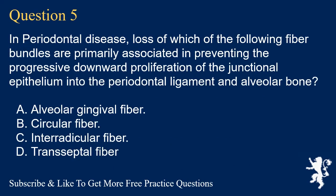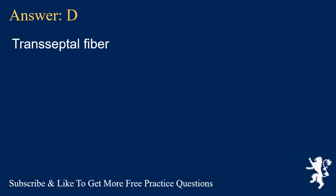Question 5. In periodontal disease, loss of which of the following fiber bundles are primarily associated in preventing the progressive downward proliferation of the junctional epithelium into the periodontal ligament and alveolar bone? A. Alveolar gingival fiber. B. Circular fiber. C. Interradicular fiber. D. Transeptal fiber. Answer: D. Transeptal fiber.